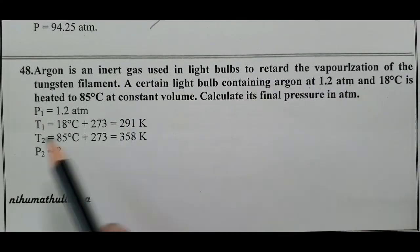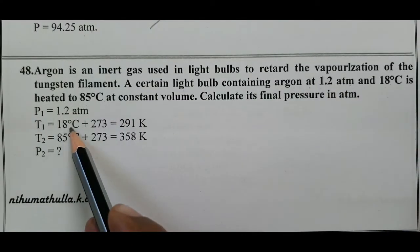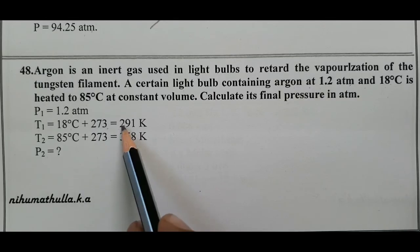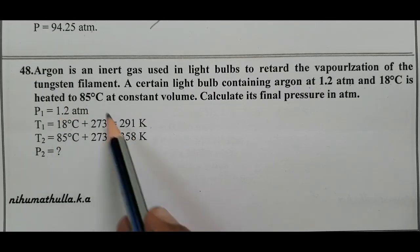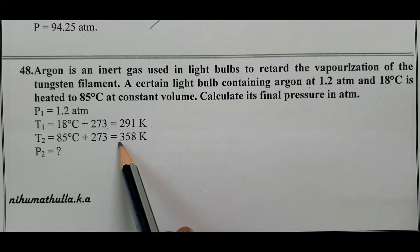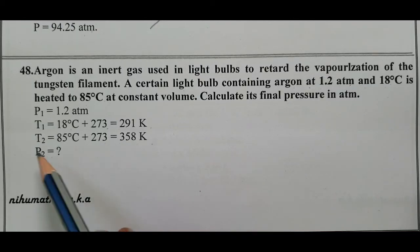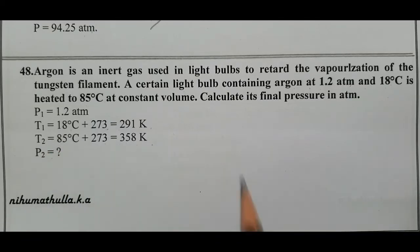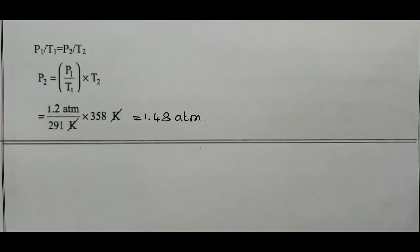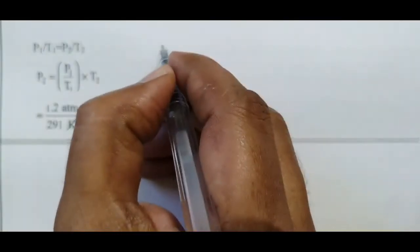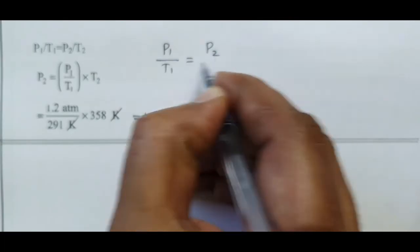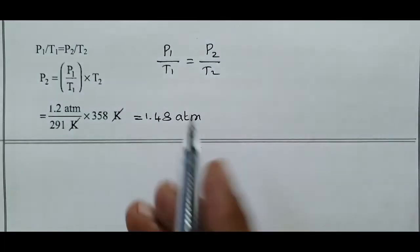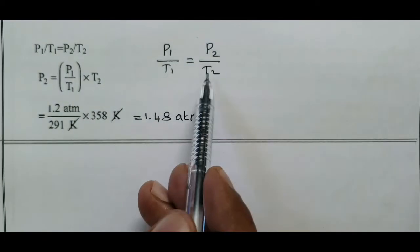Initial pressure P1 = 1.2 atm. T1 = 18°C + 273 = 291 K. T2 = 85°C + 273 = 358 K. The relation between pressure and temperature at constant volume is Gay-Lussac's Law: P1/T1 = P2/T2.